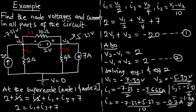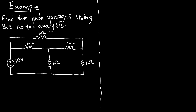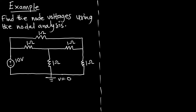Let's look at the second example to reinforce the idea. In Example 2, it says: find the node voltages using nodal analysis. We have our circuit and we have to find the node voltages. First, let's find the number of nodes: we have node 1, node 2, node 3, and node 4. Let's ground one as our reference node with V = 0, and assign voltages V1, V2, and V3 to the remaining nodes.